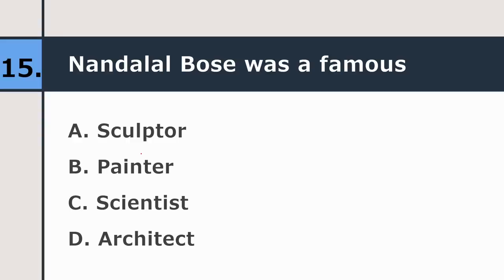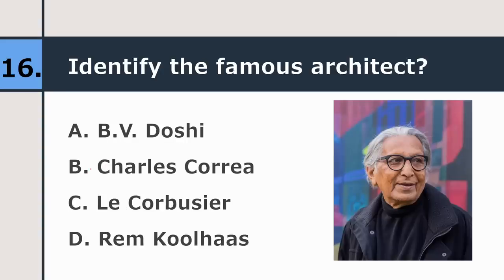Fifteenth question: Nandalal Bose was a famous sculptor, painter, scientist, or architect? The correct answer is painter. Sixteenth question: identify the famous architect — B.B. Doshi, Charles Correa, Le Corbusier, or Dange Palhas? The correct answer is B.B. Doshi, who also received the Pritzker Prize in 2018.